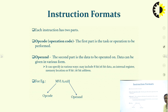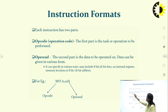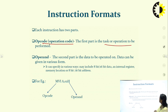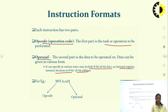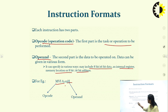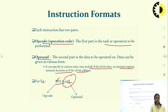Now, coming to the instruction format. Before we go to the data transfer instruction, we will discuss the instruction format. Each instruction has two parts. The first part is the opcode — that is, the operational code — which tells what kind of operation is to be performed. The second part is the operand, which is the data to be operated on. For example, in MVI A, 02H, the MVI A is the opcode and 02H is the operand.